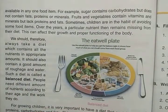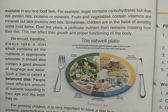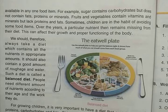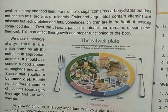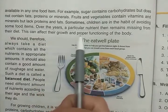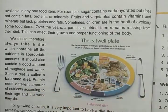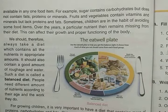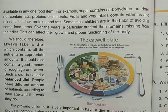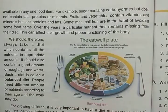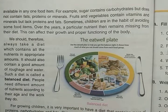Sometimes children have the habit of avoiding some food items. Many children avoid particular foods when they are served at home. Over the years, a particular nutrient then remains missing from their diet, and this can affect their growth and proper functioning of the body.